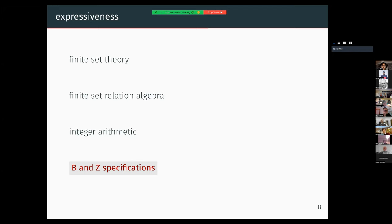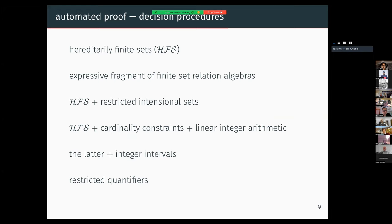The automated proof capabilities of SetLog are based on the implementation of several decision procedures. SetLog implements a decision procedure for the boolean algebra of hereditarily finite sets (HFS). It also implements a decision procedure for a very expressive fragment of finite set relation algebras.